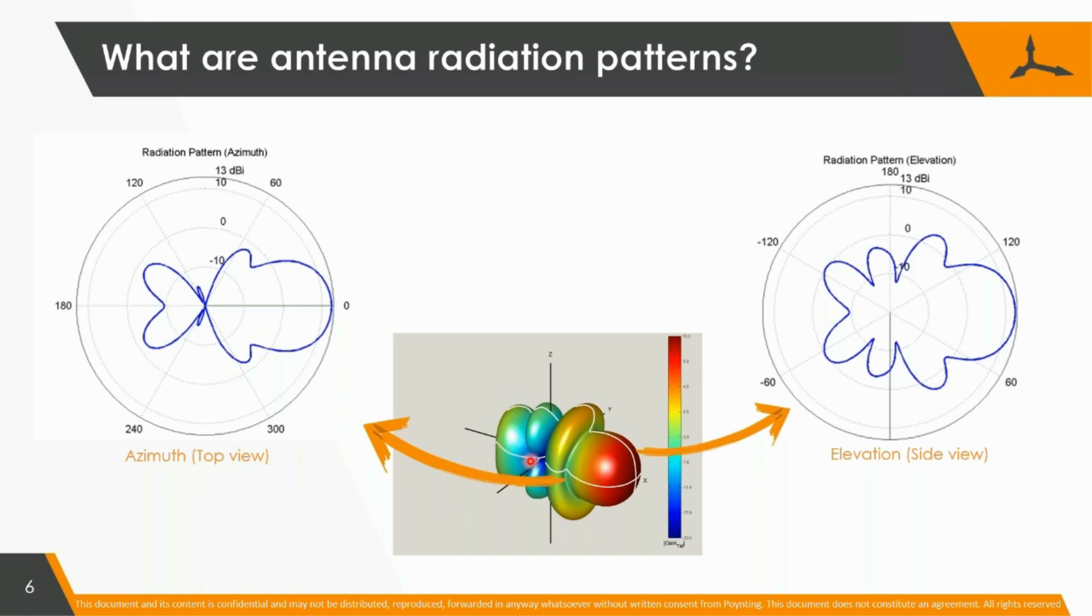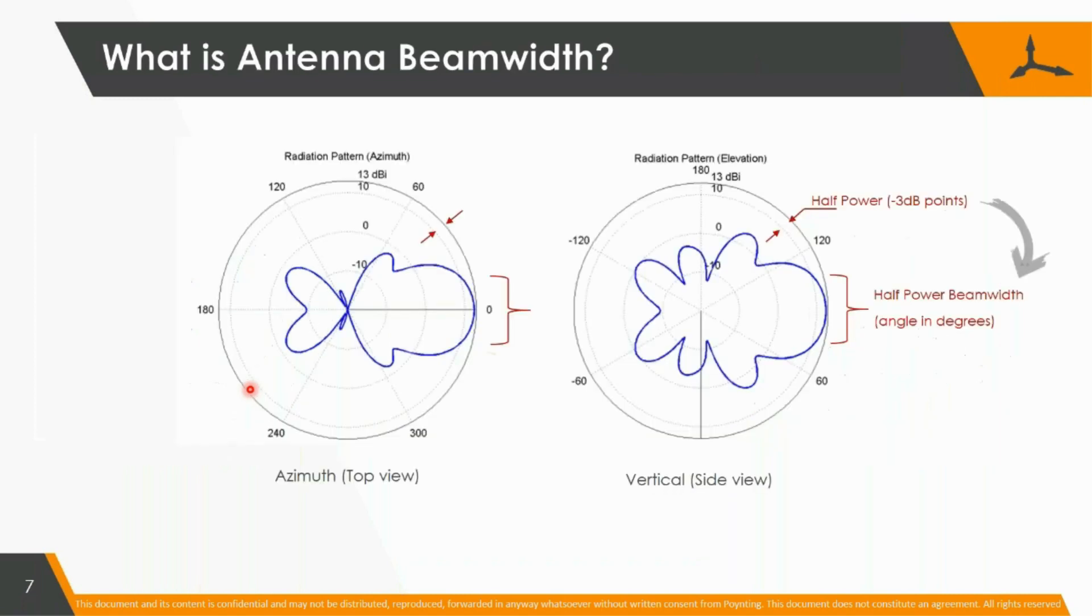And the other cut is this one that you see here, and that's really the radiation pattern in azimuth. But always do remember that those are just two slices out of a three-dimensional bubble, which describes how an antenna focuses the beam, and that's what gives it gain in specific directions.